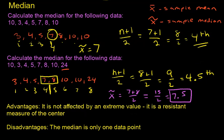Now notice adding in that outlier really did not have an effect on the median. And that's the main advantage to the median. It's that it's not affected by extreme values. And so that makes it a resistant measure of center, unlike the mean.